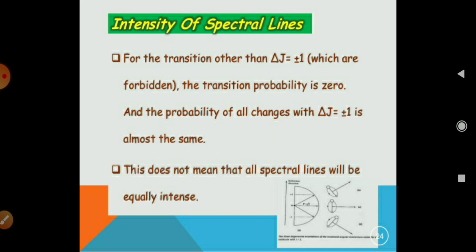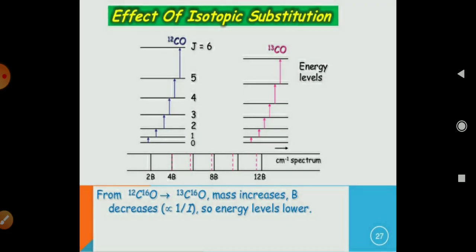Here you can see the diagram of the spectral line intensities. Now, what is the effect of isotope substitution? Here you can see the 12CO and 13CO. These both are isotopes.